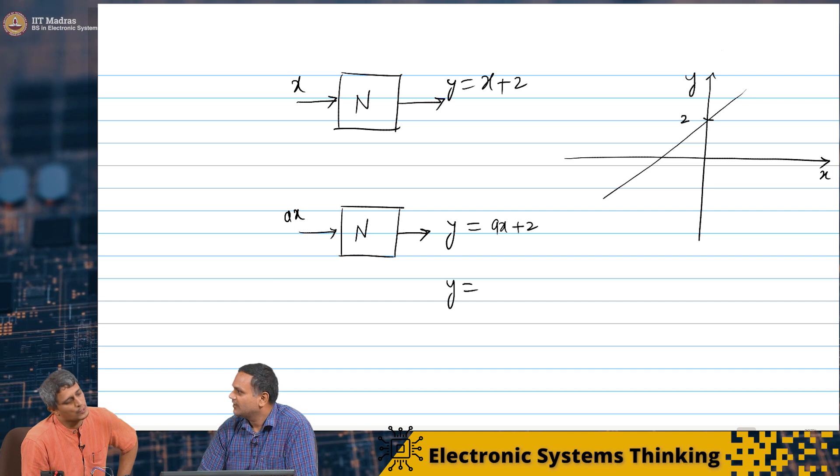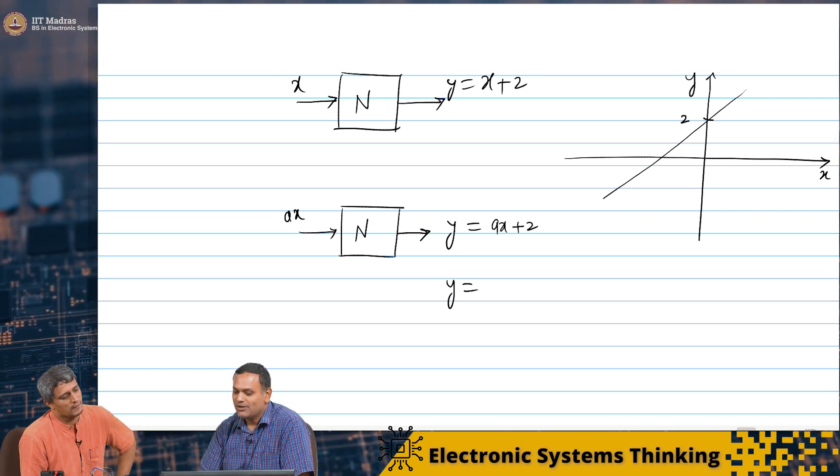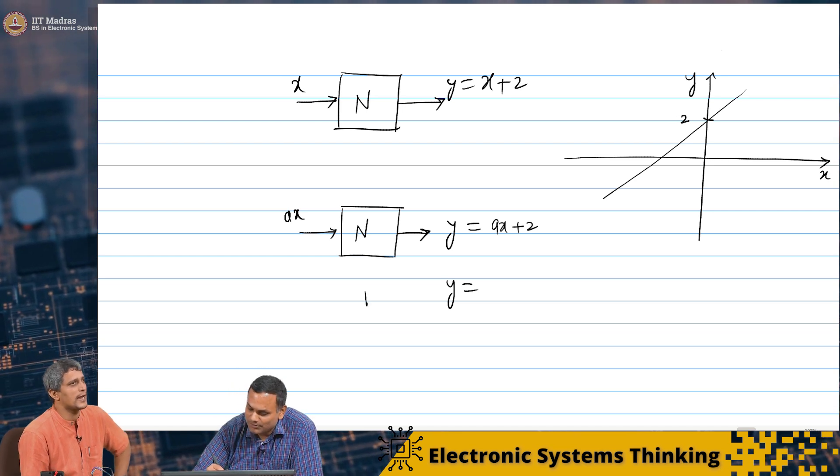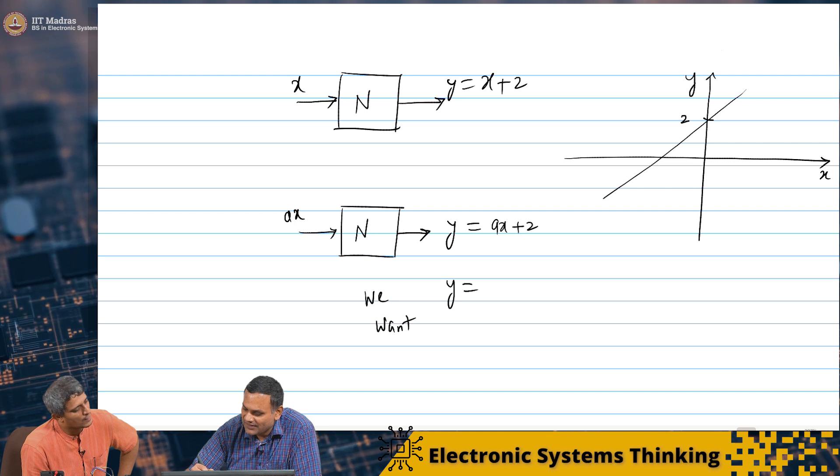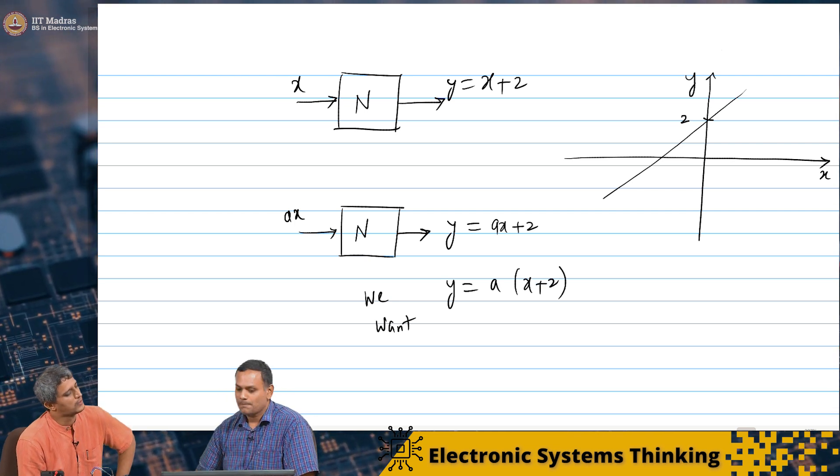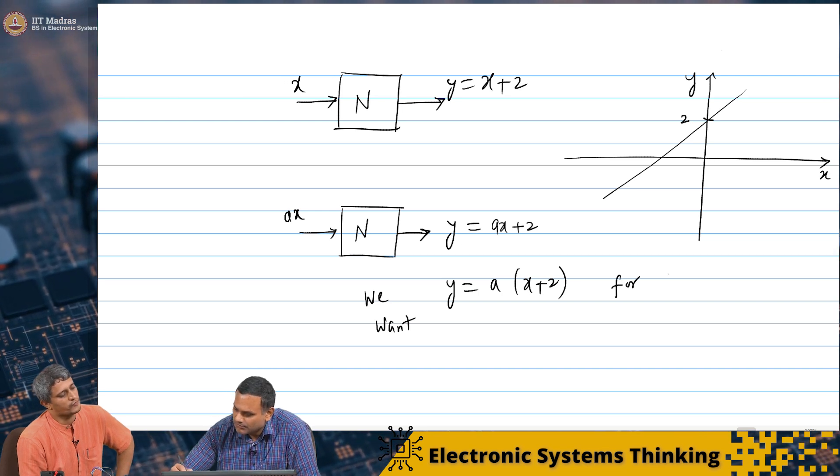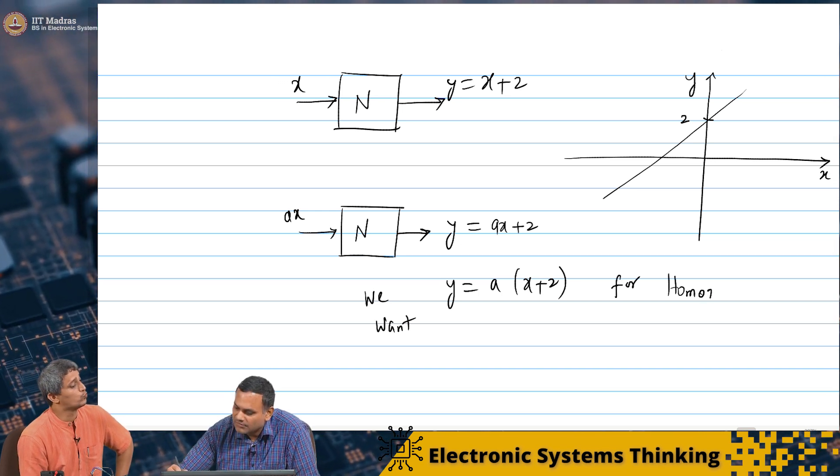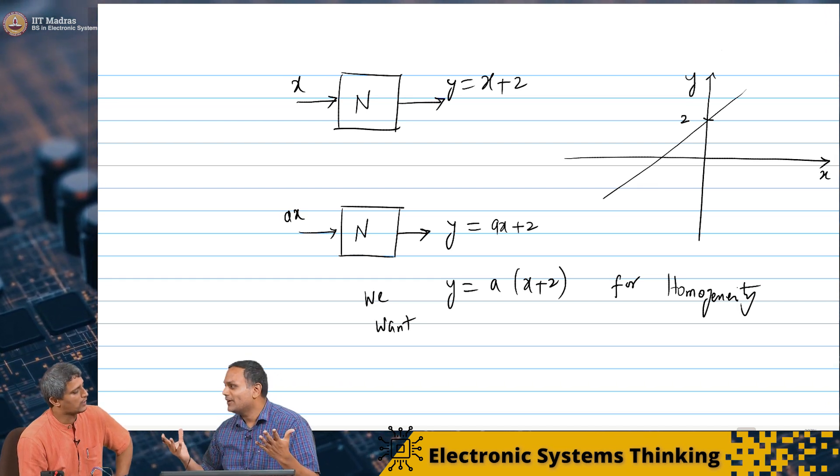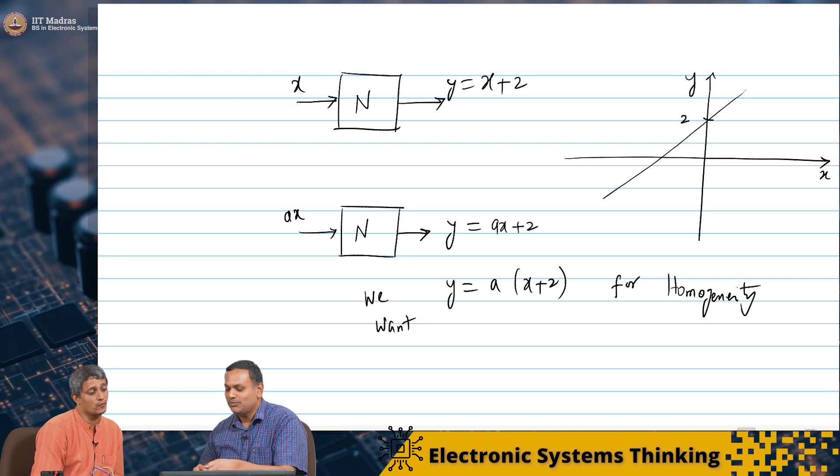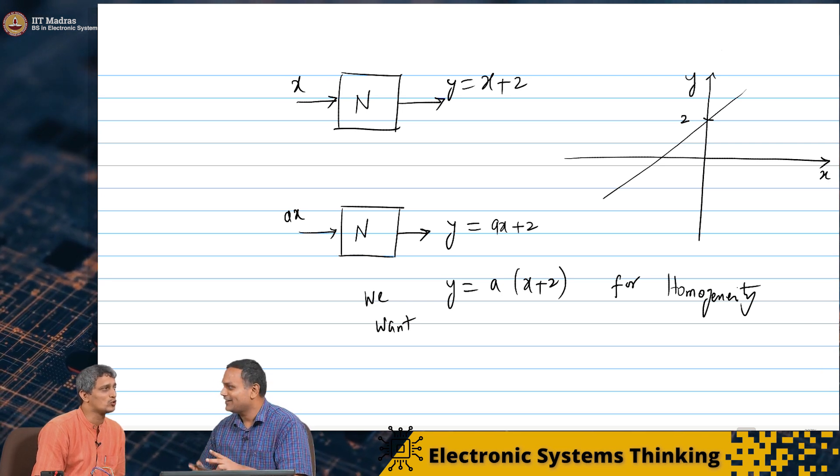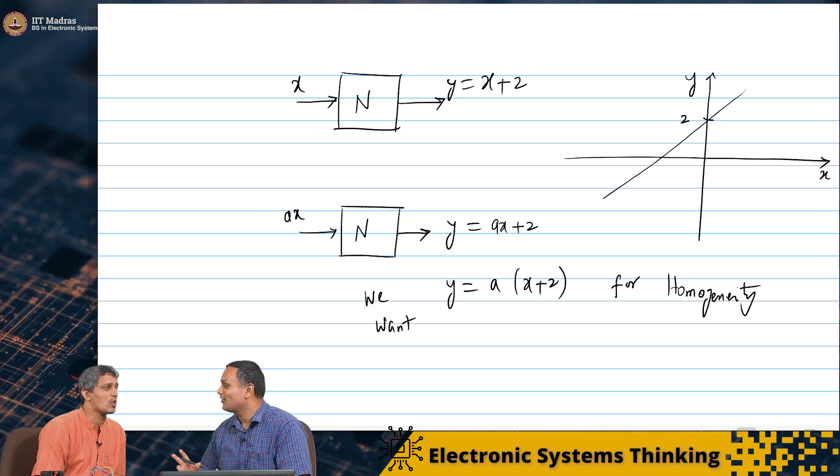What did I want? You wanted a into x plus 2. A times x plus 2. F of ax equal to a times f of x. Exactly. We wanted a into x plus 2. What we wanted for homogeneity. But we are getting ax plus 2. Correct. It is not scaling with 2a. It is not. You do not have that 2a term. Okay. Now, this is why even though the network is linear, it is still not, superposition is still not valid.